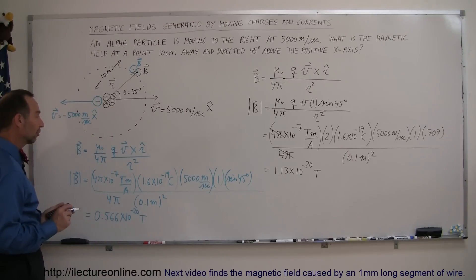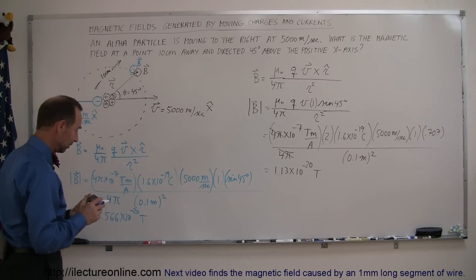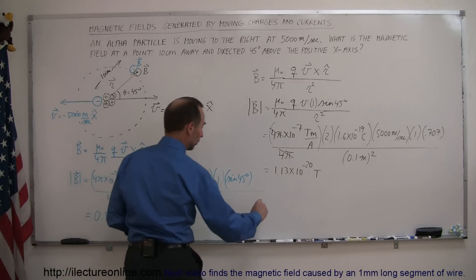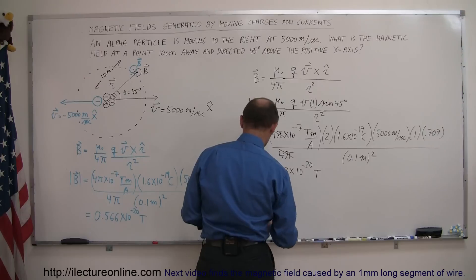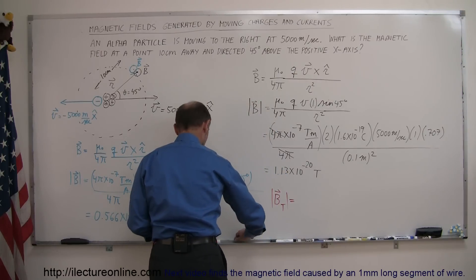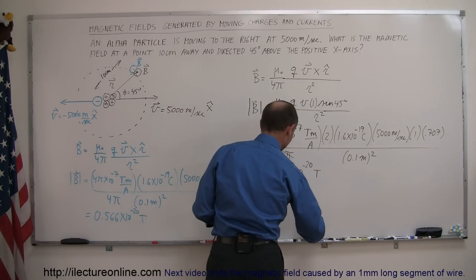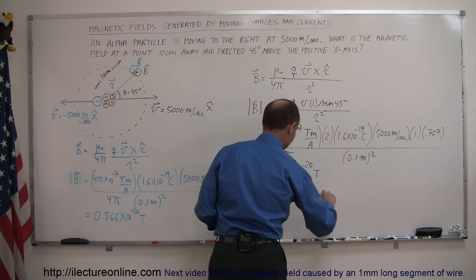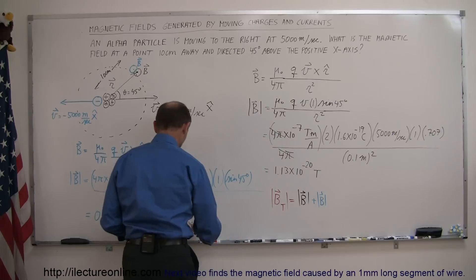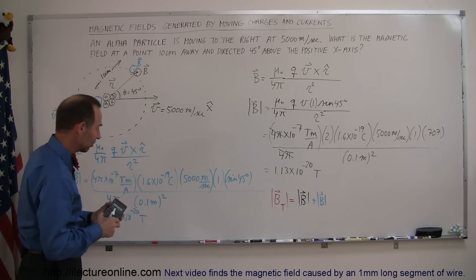Alright, and so then the total magnetic field, and I'll use the red for that, so the magnitude B total is simply equal to the B field caused by the alpha particle plus the B field caused by the electron, so we're simply adding these together, since they're pointing in the same direction, we can simply add.